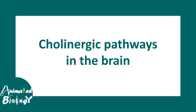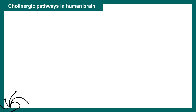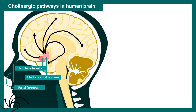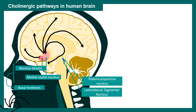When it comes to the cholinergic pathway, there are different cholinergic pathways and it all starts from the basal forebrain. The nucleus basalis and the medial septal nucleus radiate to different regions in the cortex and the hippocampus. There is another area where cholinergic pathways are very prominent: the pedunculopontine nucleus and the lateral dorsal tegmental nucleus, which can project to different regions including the brainstem, cerebellum, and selected locations in the cortex.